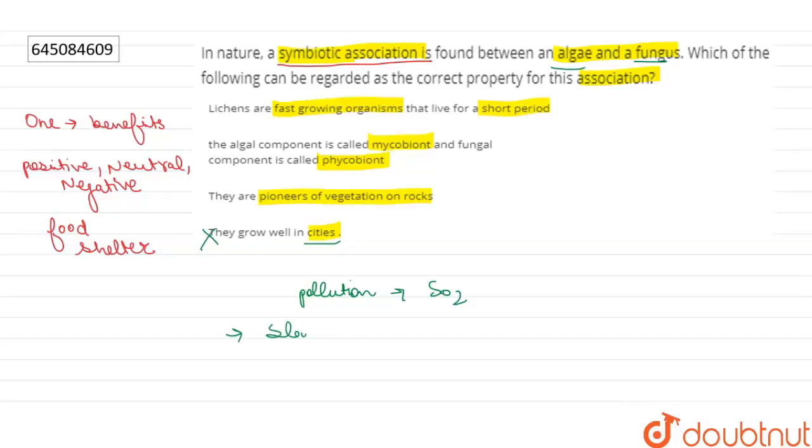They have a growth rate of about 0.5 mm to 500 mm per year, so the first statement is also wrong. If we talk about the second statement, the second statement is also wrong because the fungal component in lichens is known as mycobion and the algal component in lichens is known as phycobion.